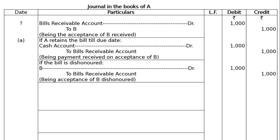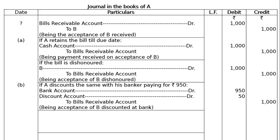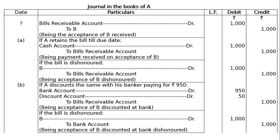Part B: if A discounted the bill with his banker for Rs.950 — Bank Account debited Rs.950, Discount Account debited Rs.50, to Bills Receivable Account Rs.1000 — being the acceptance of B discounted at bank. And if the bill is dishonoured: B debited to Bank Account — being acceptance of B discounted at bank dishonoured.